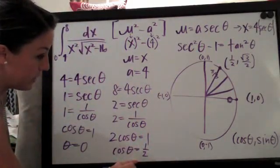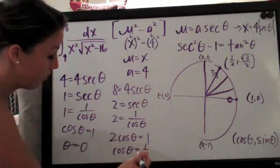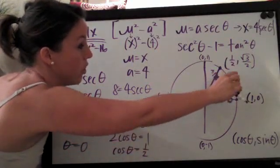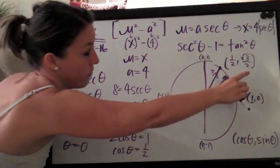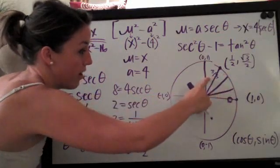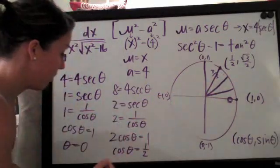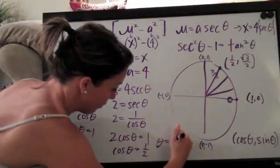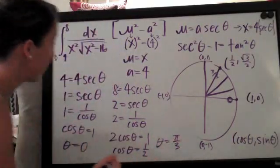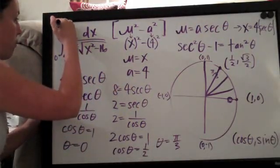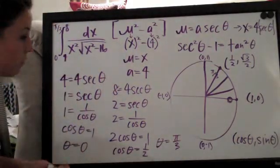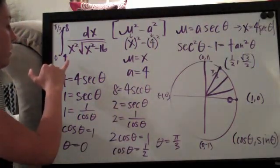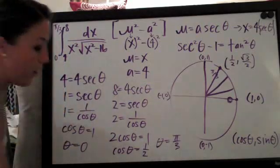So now we need to figure out where the x coordinate here on the unit circle is equal to one half, and in fact it's this point right here where the coordinate is one half, the square root of three over two, and the value there on the unit circle is pi over three. So in this case theta equals pi over three and I'm just going to go ahead and write that up here as well, pi over three.